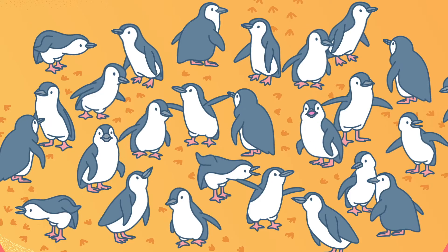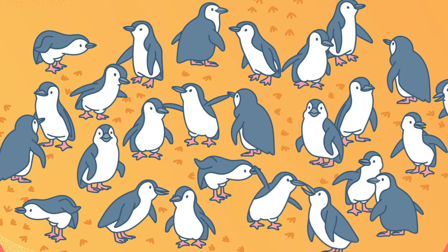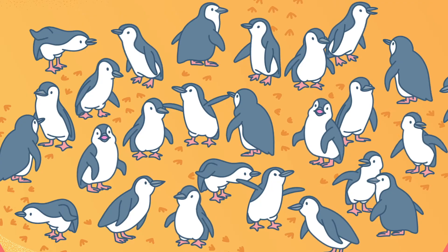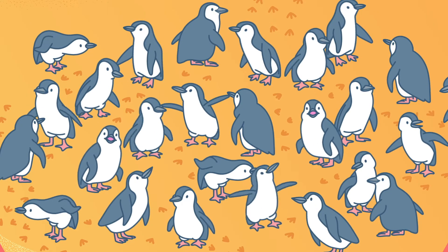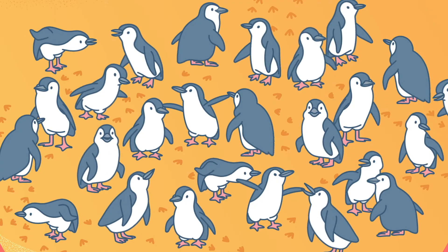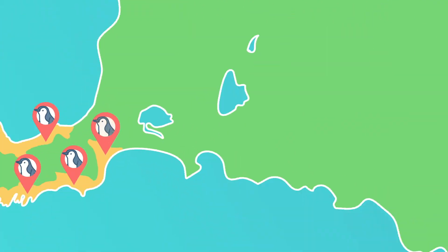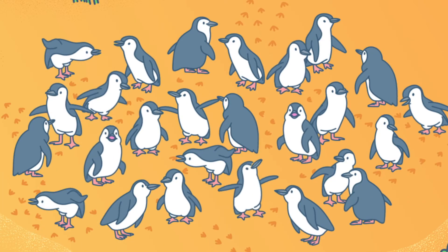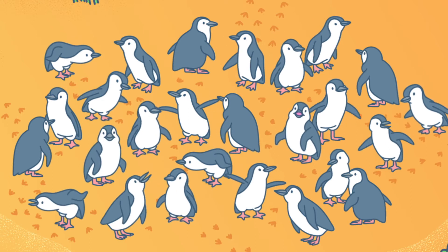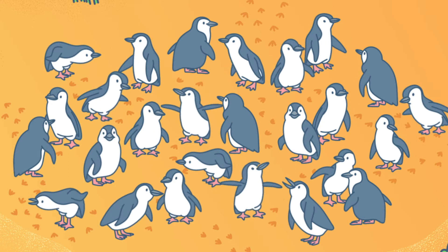A population is a group with at least one common characteristic. This population of penguins have two things in common: they're all little penguins, the smallest penguin species, and they all live on Phillip Island in Victoria, Australia. The population is the entire penguin colony on the island, which is about 30,000 birds.